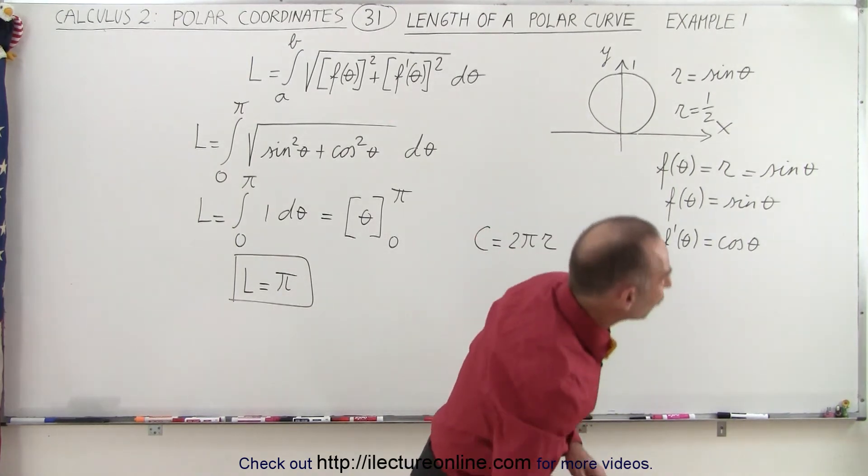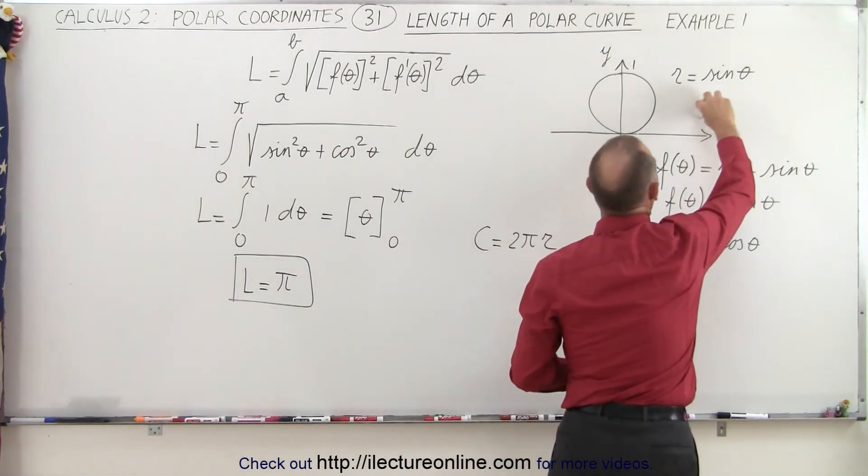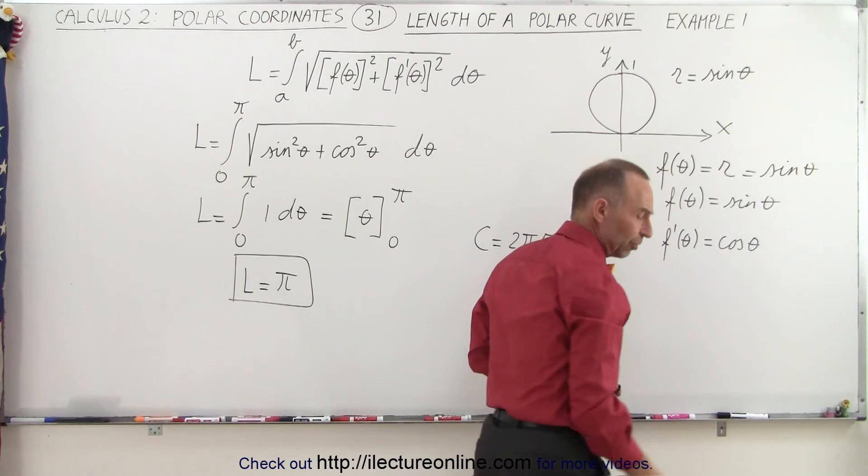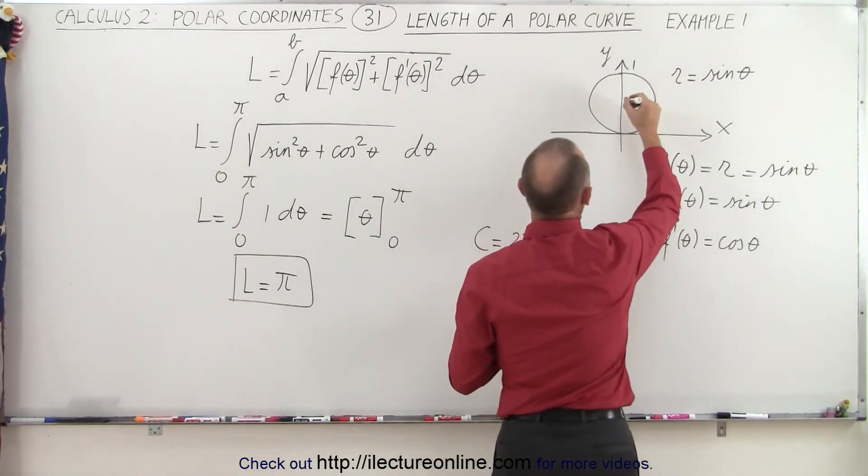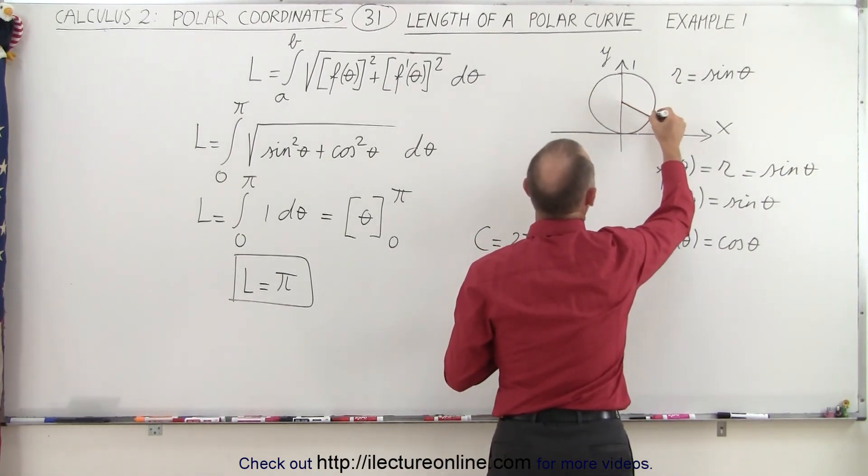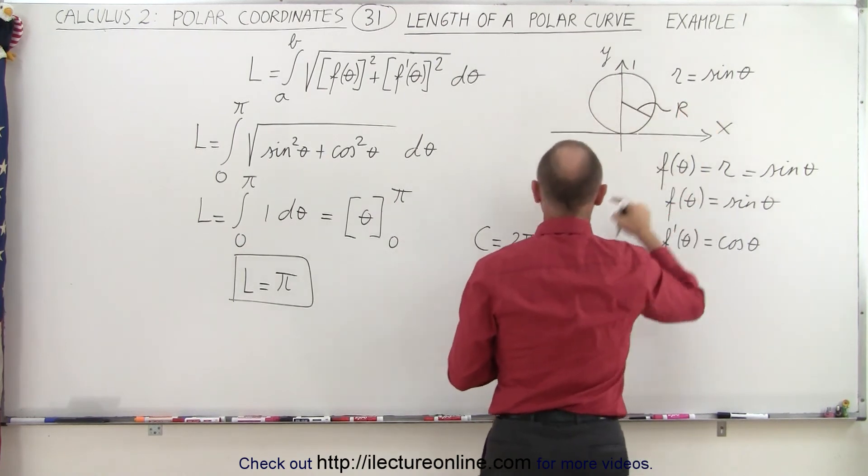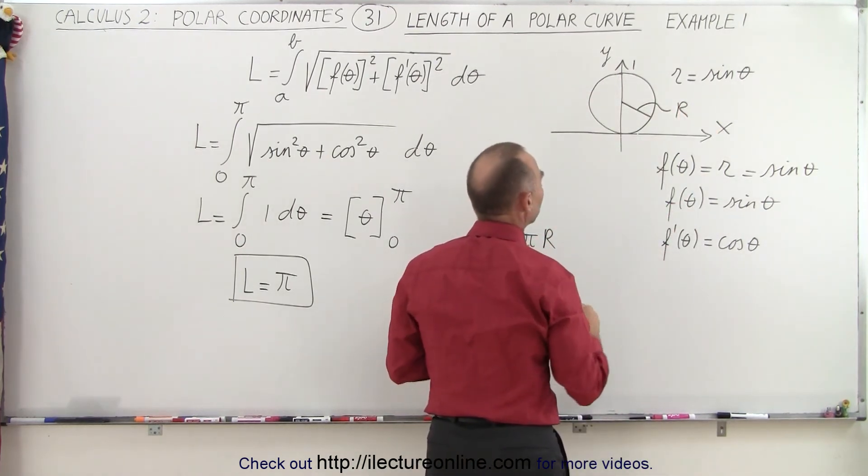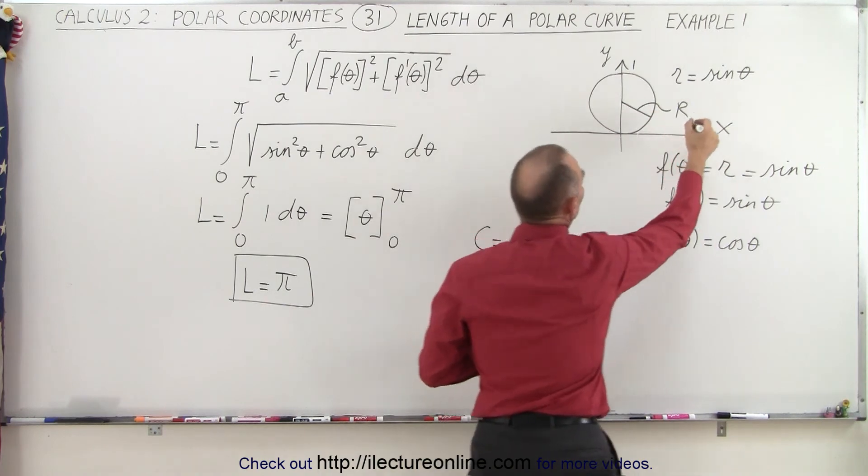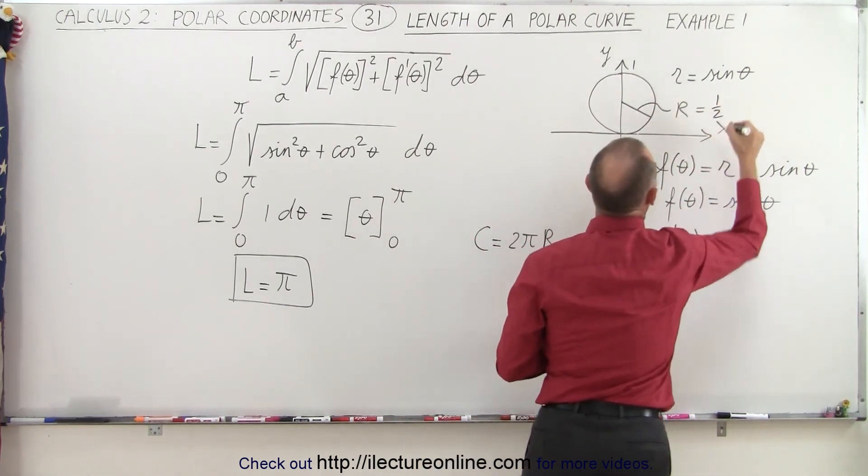Well, I got to be careful. I can't use a small r for that, because the small r is a function of theta. The radius of this circle, if I go from the middle of the circle to the edge here, let's call that big R. Let's make this into a big R so we don't confuse the two. And yes, the radius in this case for this circle is equal to one half.